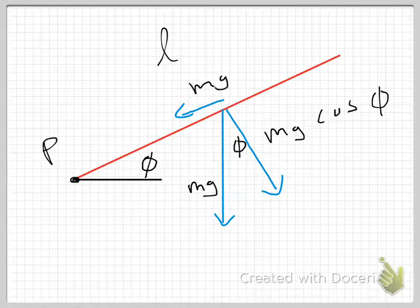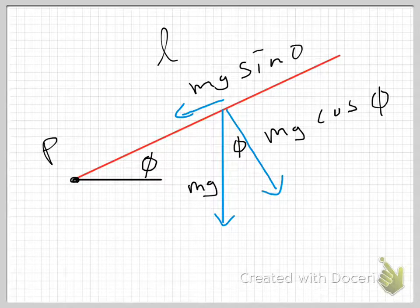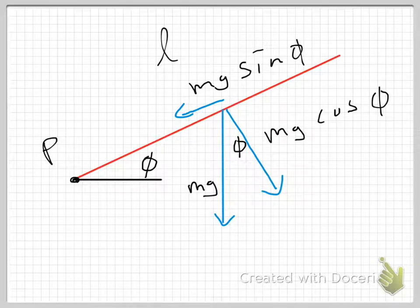This will be mg sine of phi, and if all the things are equal, gravity is going to be applied at the center of mass of the object, which in this case I've made the center of the object, the geometric center.